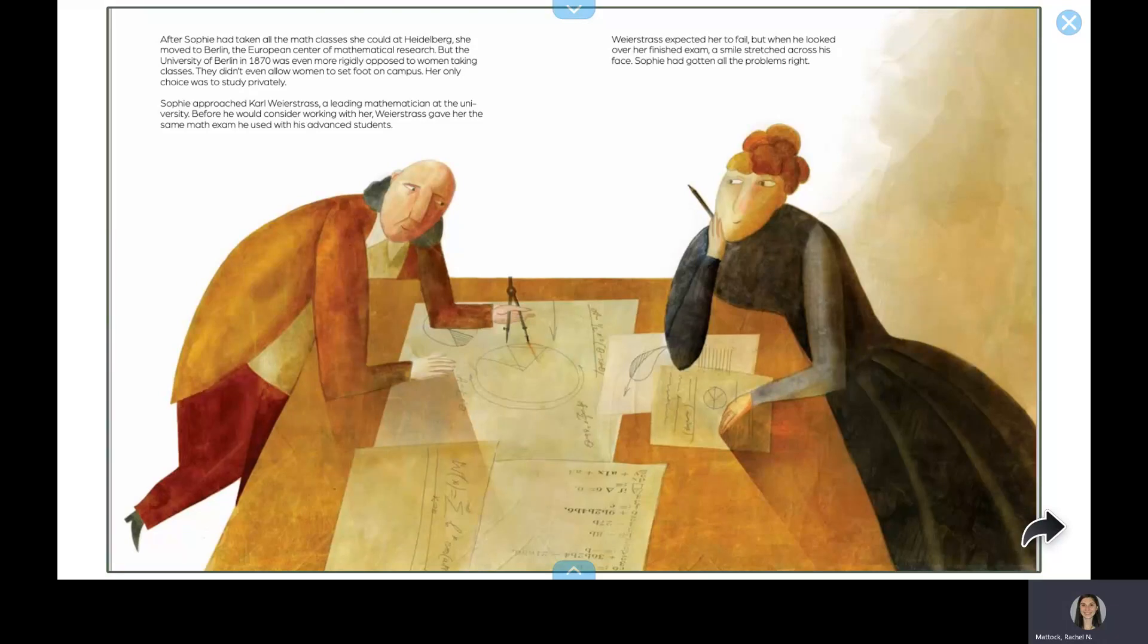Sophie approached Carl Weierstrass, a leading mathematician at the university. Before he would consider working with her, Weierstrass gave her the same math exam he used with his advanced students. Weierstrass expected her to fail. But when he looked over her finished exam, a smile stretched across his face. Sophie had gotten all the problems right.